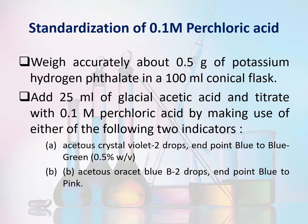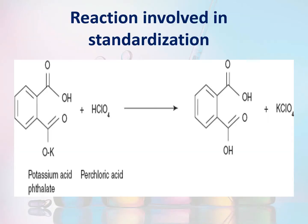Standardization of 0.1 molar perchloric acid: Weigh 0.5 gram of potassium hydrogen phthalate. Add 25 ml of glacial acetic acid and titrate against 0.1 molar perchloric acid. Using crystal violet as indicator, the endpoint is blue to green; or using oracet blue indicator, the endpoint is blue to pink. The reaction involved: potassium hydrogen phthalate reacts with perchloric acid to form phthalic acid and potassium perchlorate.